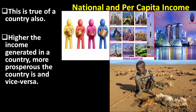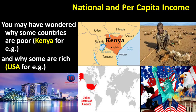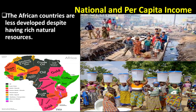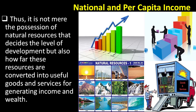You may have wondered why some countries are very poor — like Kenya for example — while some are rich, like the USA. Similarly, some are growing at a faster rate, like China, while others are lagging behind, like African countries. Even African countries remain backward despite having rich natural deposits when compared to other countries.